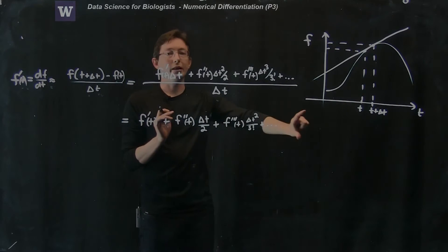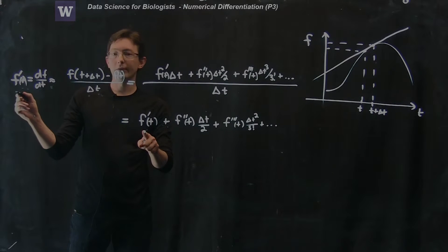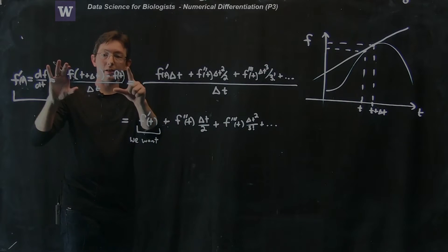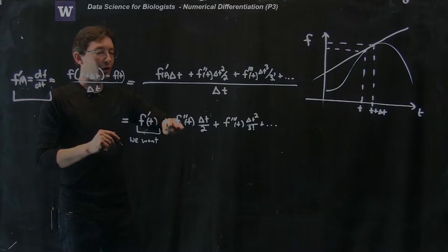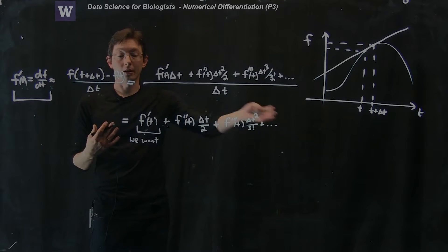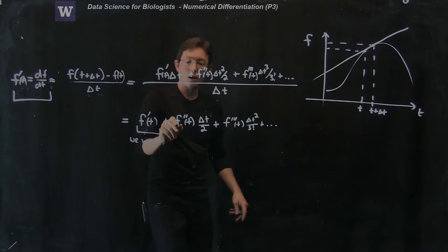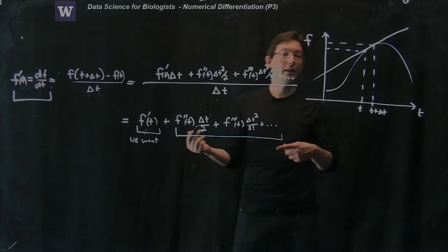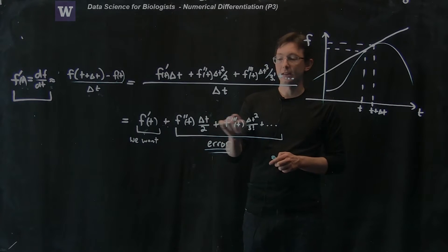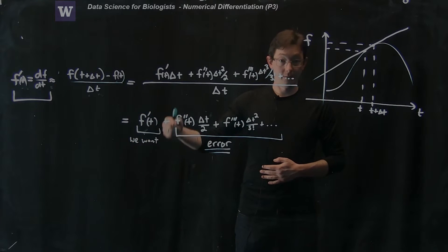So this is exactly what my finite difference derivative is doing mathematically. Notice the first term is the derivative that I want — that's what we want. The first term in the Taylor series of this approximation is the thing we want, and all the other stuff contributes to the error in the approximation. We know this is only exact when delta t goes to zero, but for a finite delta t, all of these terms are real and finite and they contribute to the error. If delta t goes to zero, all these error terms go to zero and we exactly recover the derivative we want.